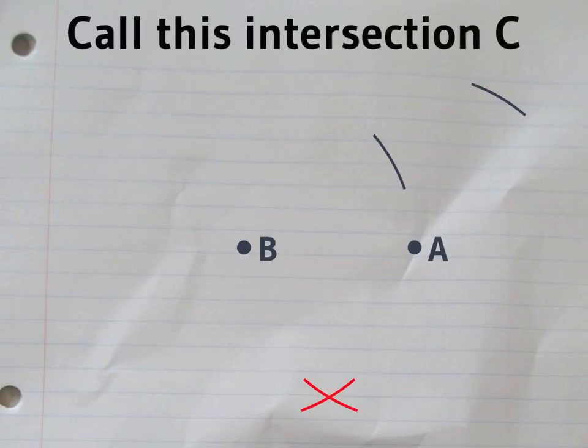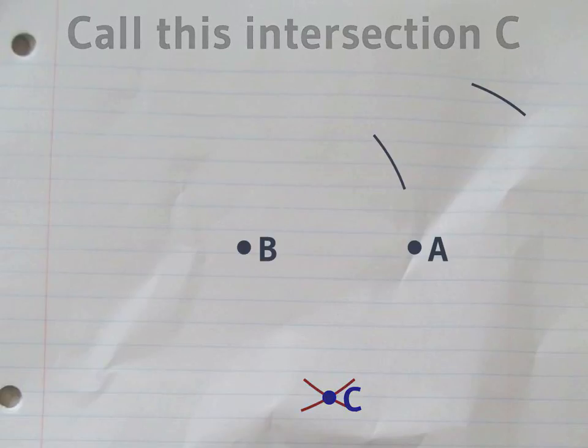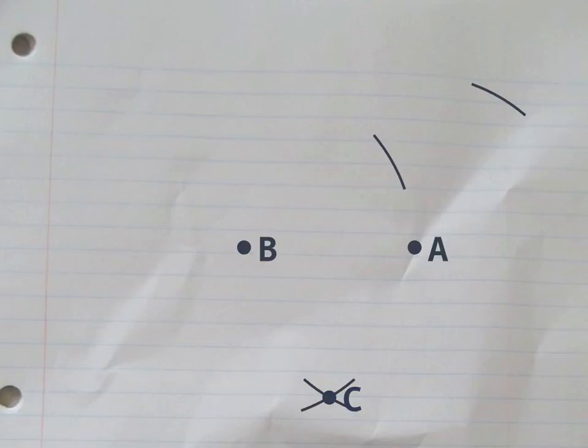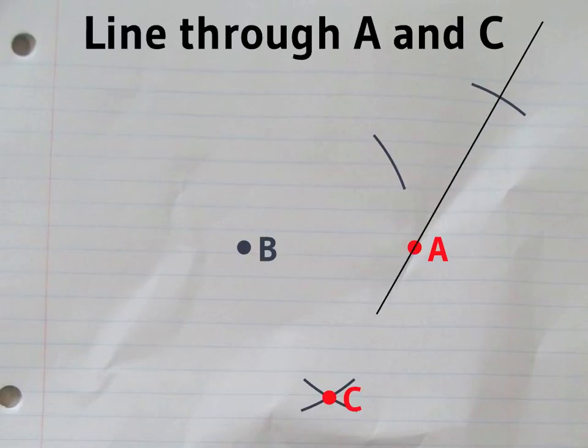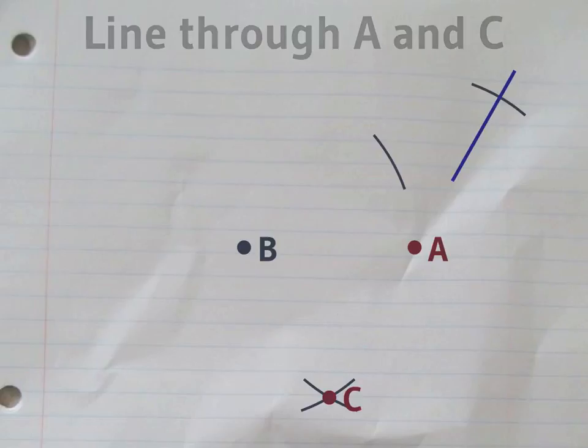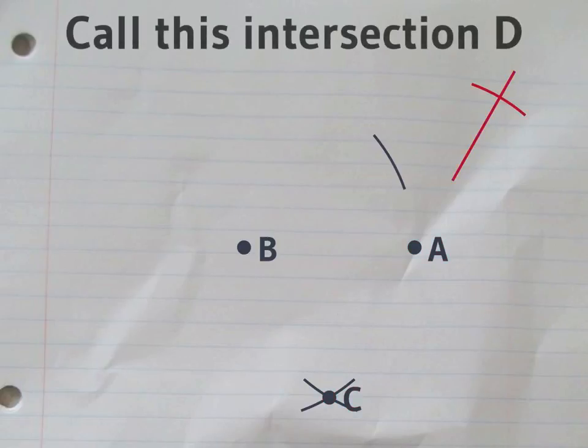This intersection we'll call C. Now you draw the line through A and C. That line is going to cut the first circle you drew. The point D is opposite C on that circle.